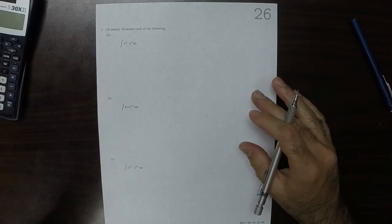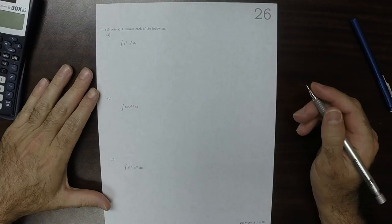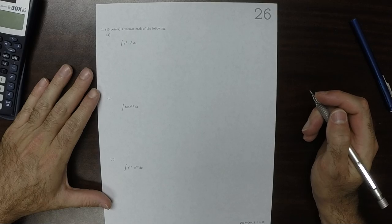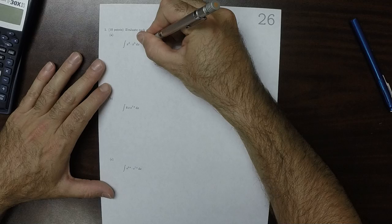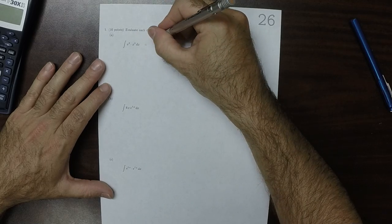This is the solution to written homework 26. Okay, so we're given three antiderivatives. Okay, the first one, the first thing we need to do is simplify.